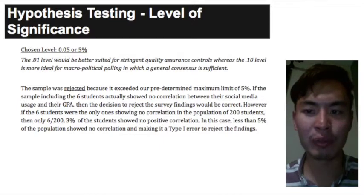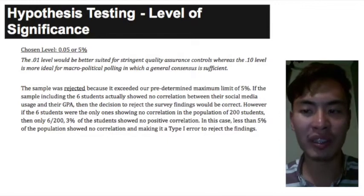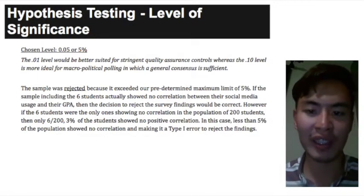However, if the six students were the only ones showing no correlation in the population of 200 students, then only six out of 200 or 3% of the population showed no correlation. In this case, less than 5% of the students showed no correlation, making it a type 1 error to reject the findings.